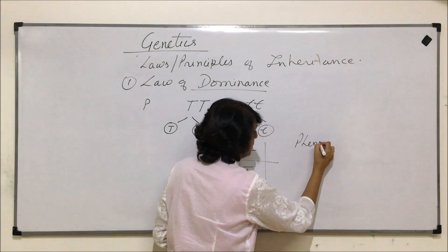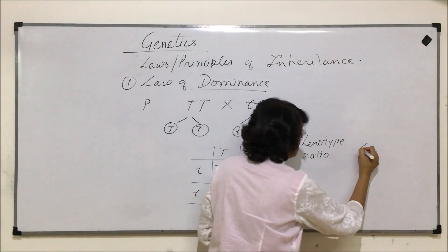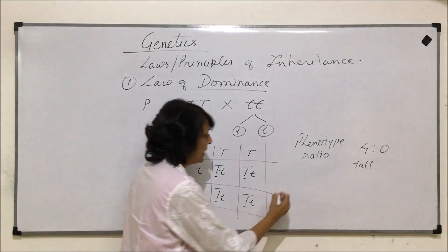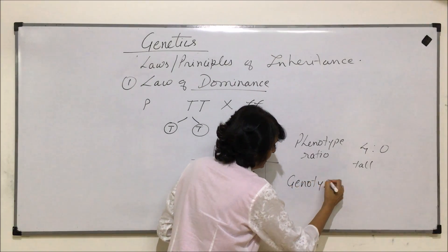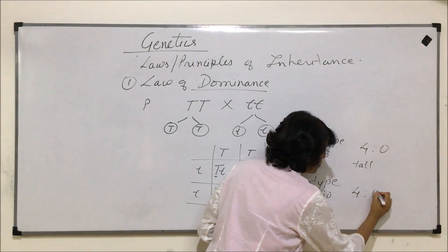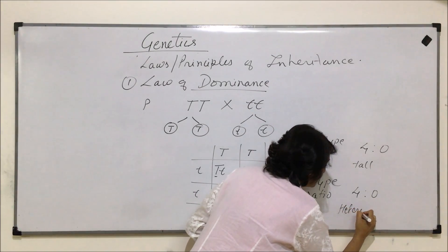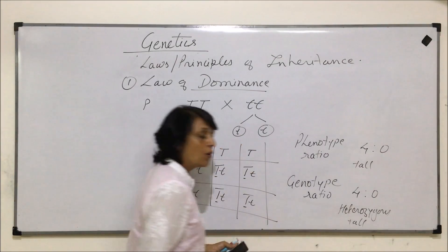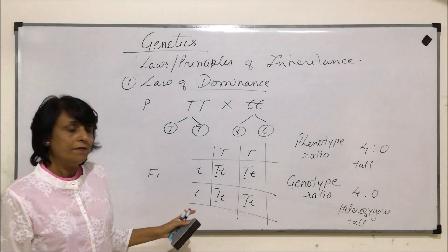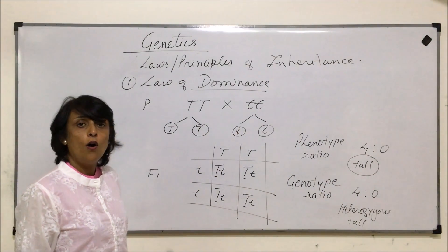The phenotype ratio is going to be 4:0 — four are going to be tall and none of them is short. The genotype ratio is also 4:0, as all four are heterozygous tall. So when the law says starting with a pure line, in F1 the trait which expresses itself is the dominant trait, and here the dominant trait is tall. This is the law of dominance.